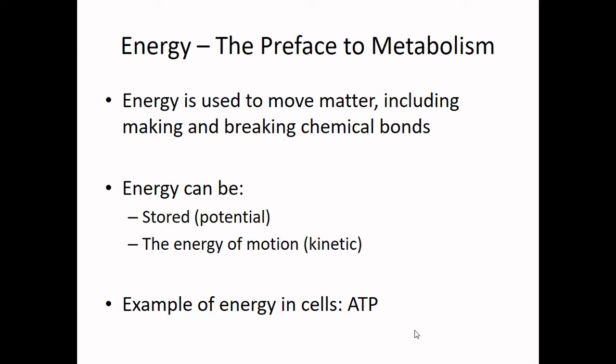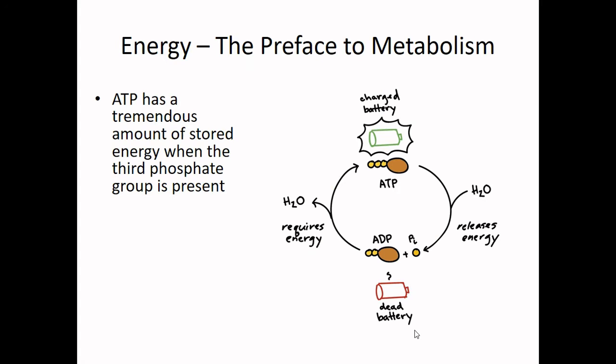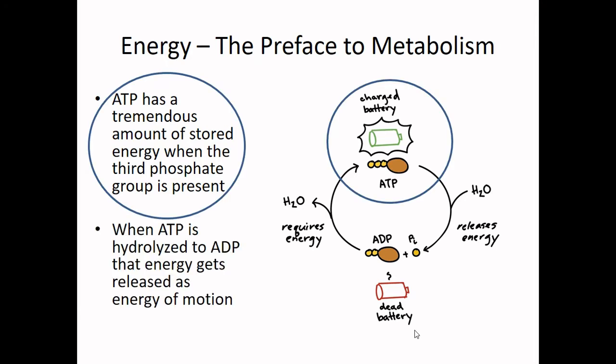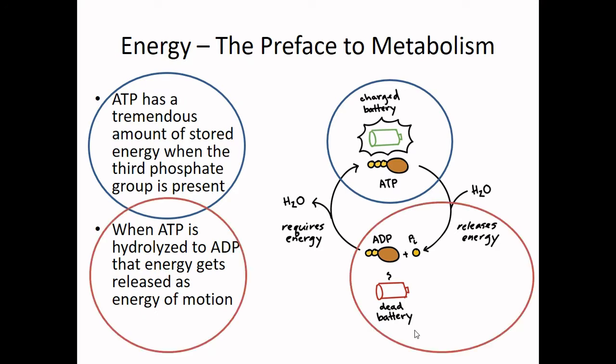The biggest and most important part of energy in our cells is ATP. ATP has a ton of stored energy. When ATP gets hydrolyzed to ADP, all of that stored energy gets released in a giant burst of kinetic energy, and that energy is used to power things in our cells.